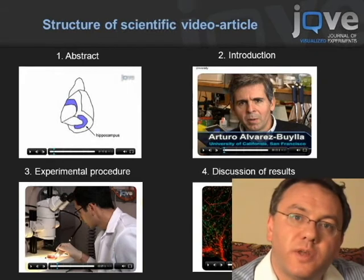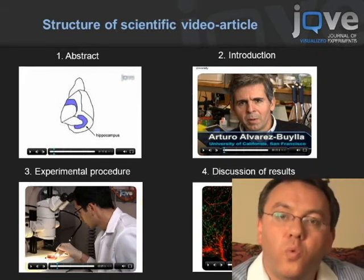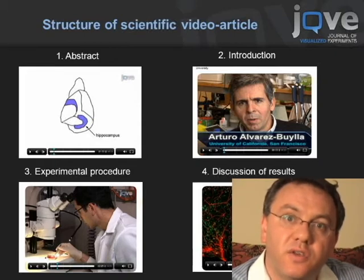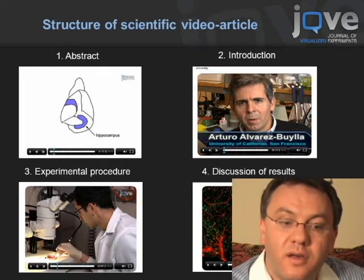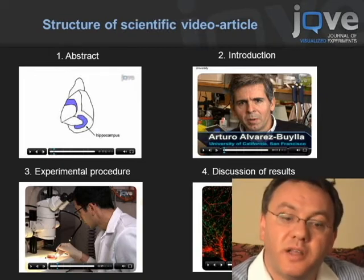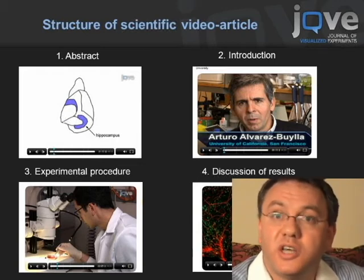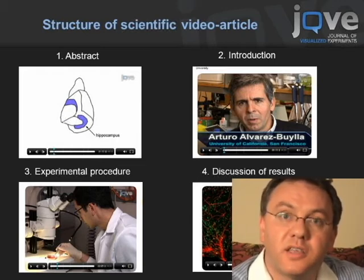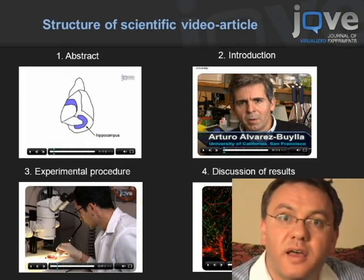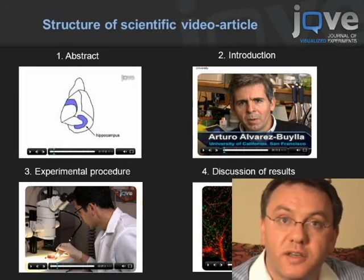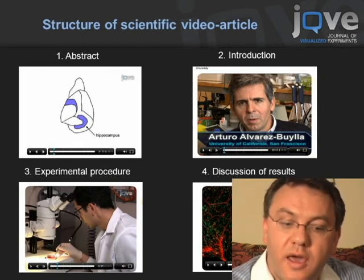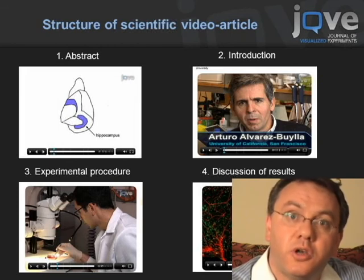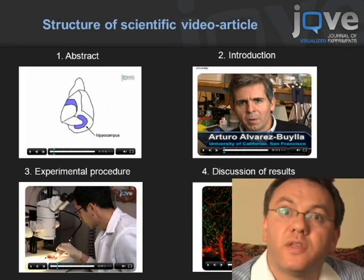One of the main questions when we started JoVE was: what will be the structure of scientific articles in video? We decided to follow the traditional text format by having abstract, introduction, experimental procedure, and discussion — just in video. The abstract typically takes one minute and is an animated description of the experiment's concept. The introduction shows scientists introducing themselves and their research subject. The main part, experimental procedure, shows a step-by-step demonstration of the experiment. The last part is a discussion of results and possible difficulties.